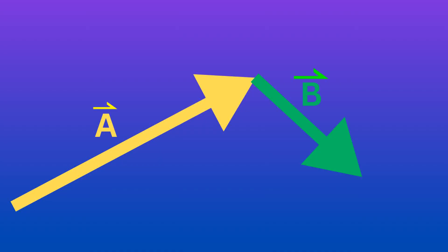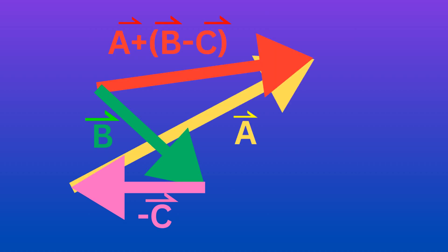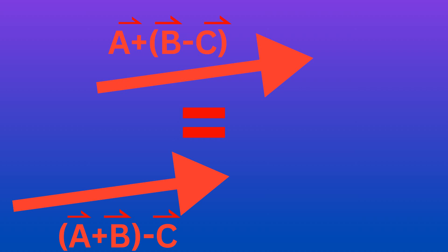As you can see with these vectors that I have up there, when you do A plus B then subtract vector C, you get the same resultant vector as if you have vector B minus vector C and then add vector A. Both scenarios give you the same resultant vector, which means that vector addition and subtraction are associative.